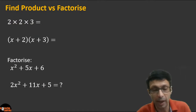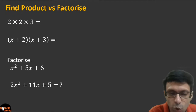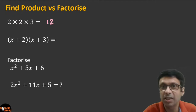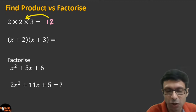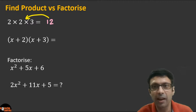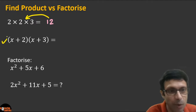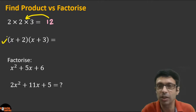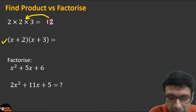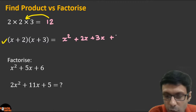Let's compare: if we say what is 2×2×3, it's 12. Here we are finding the product, and factorization is the opposite — when you factorize, you write 12 as 2×2×3. Now if we do it in algebra: what is the product of (x+2)(x+3)? You simply multiply, and you get x² + 2x + 3x + 6, which simplifies to x² + 5x + 6.